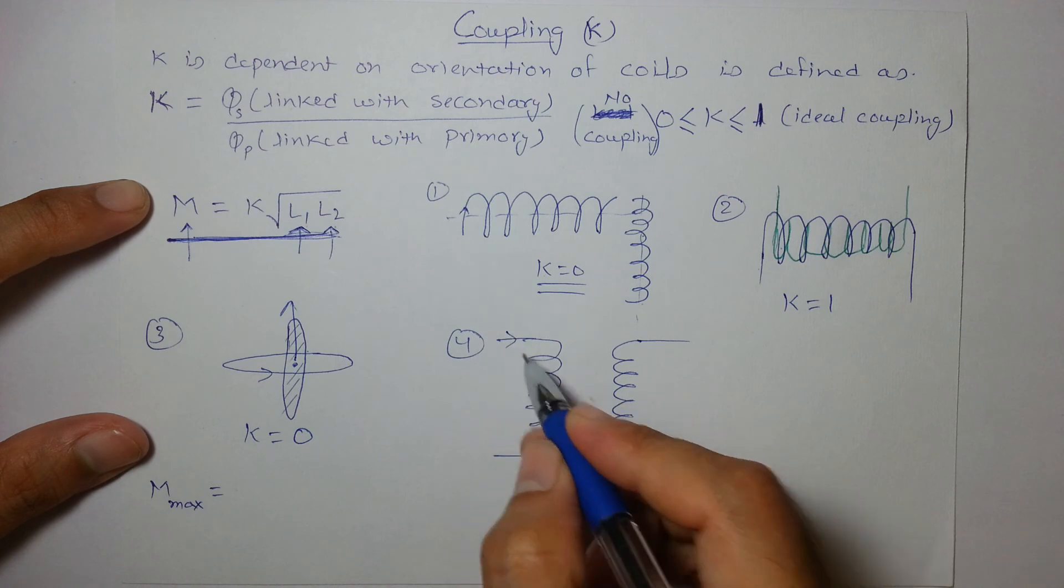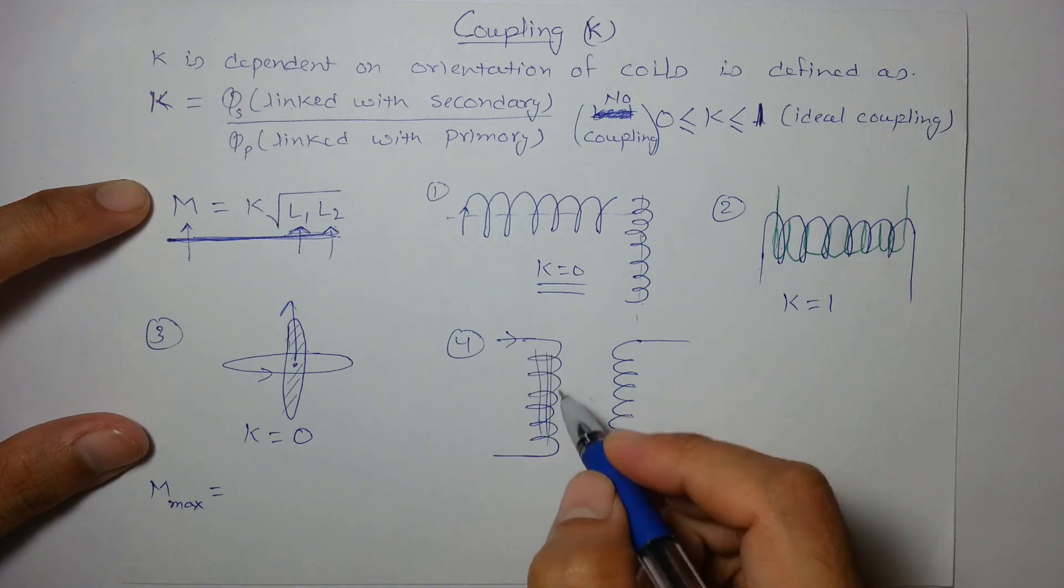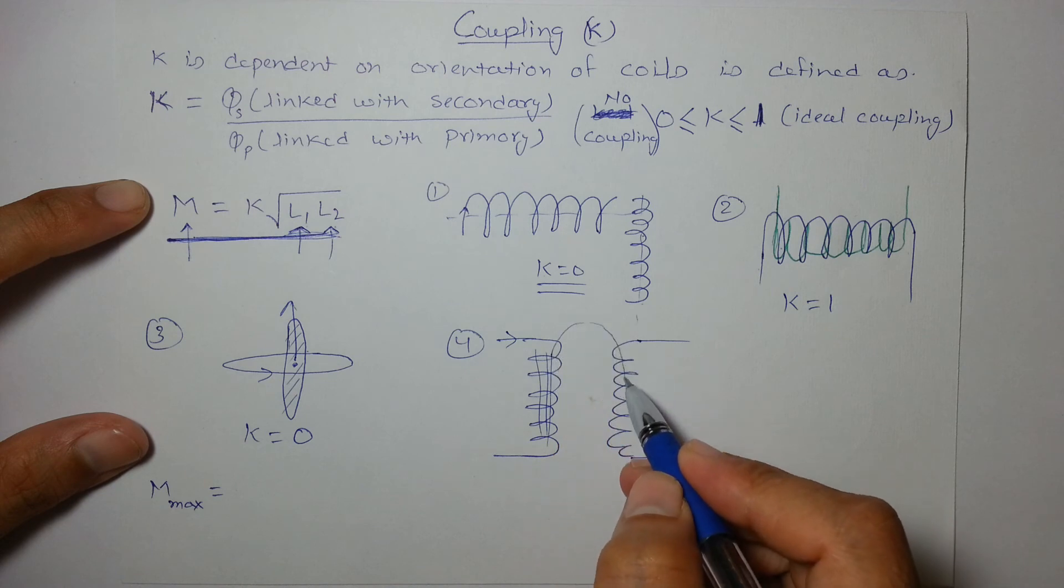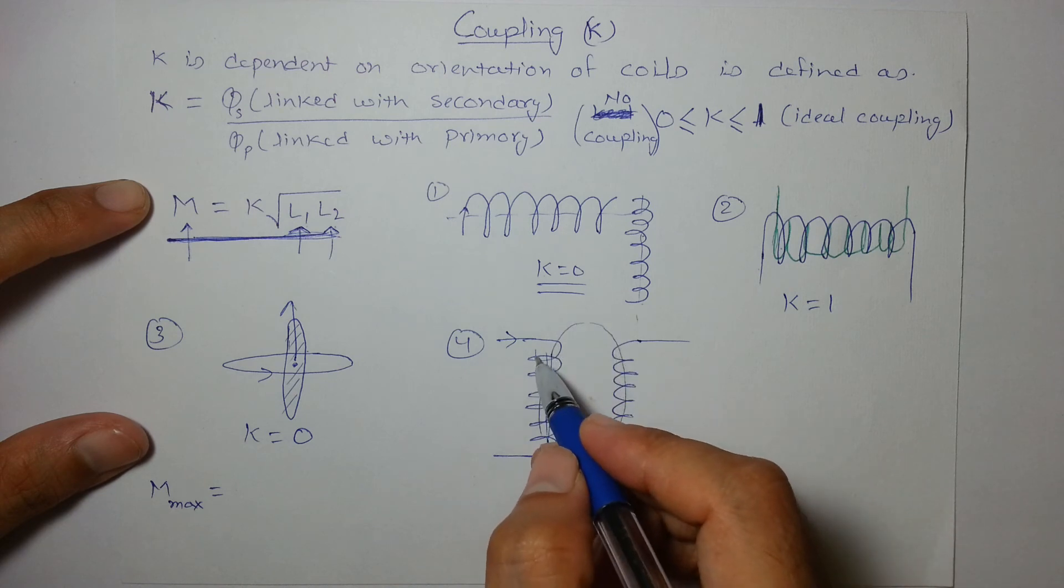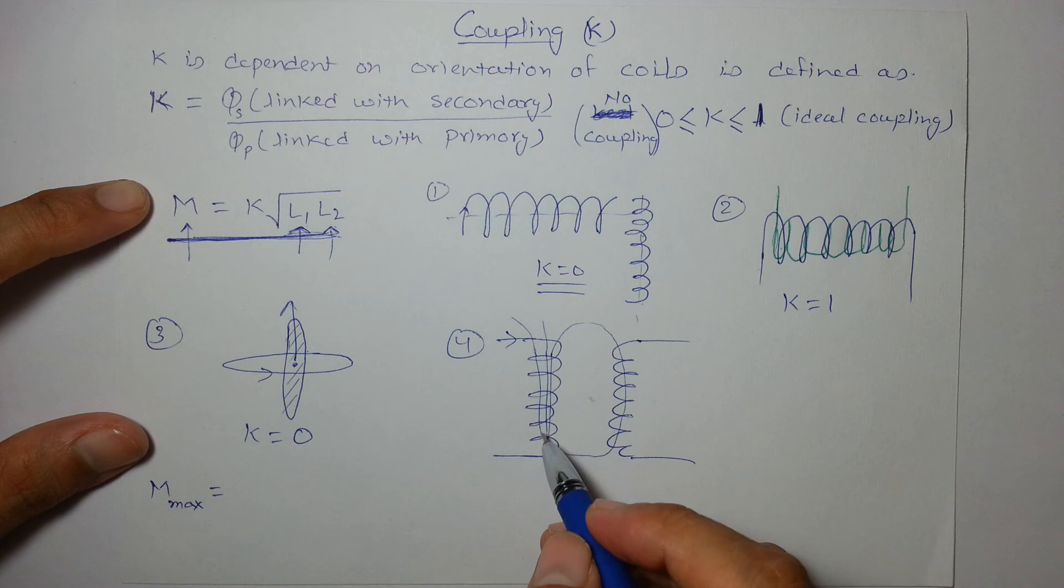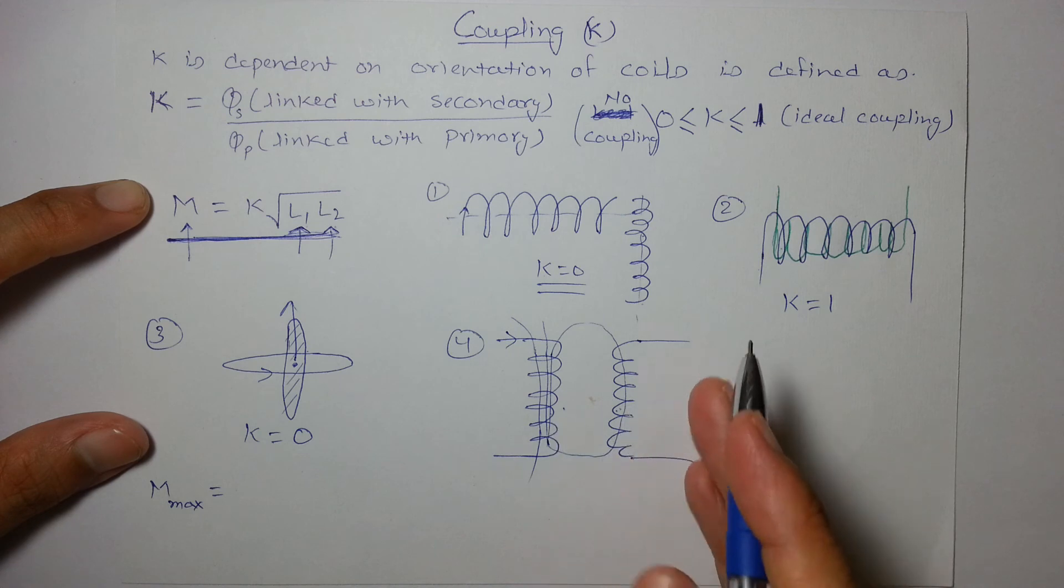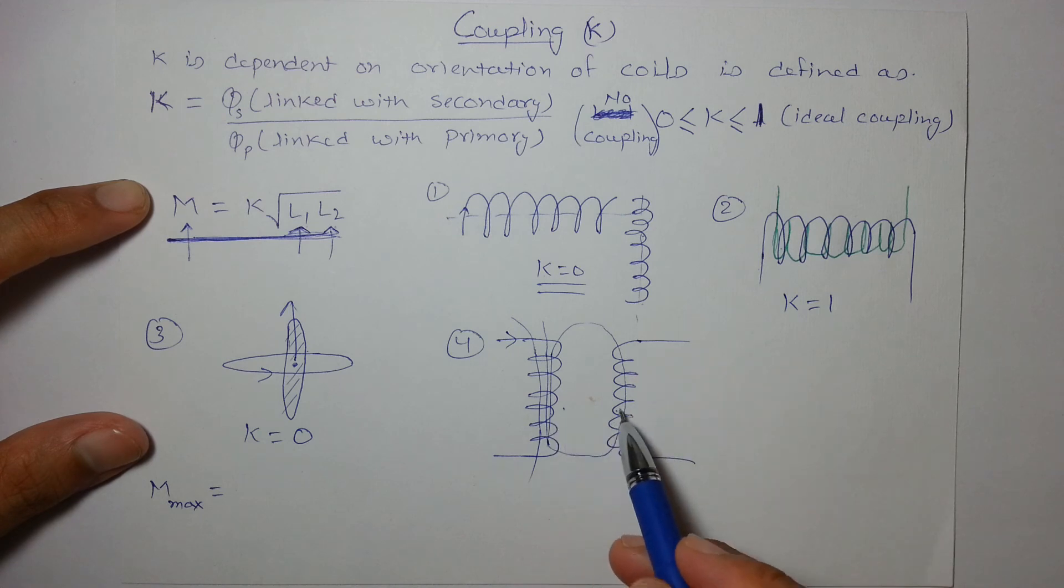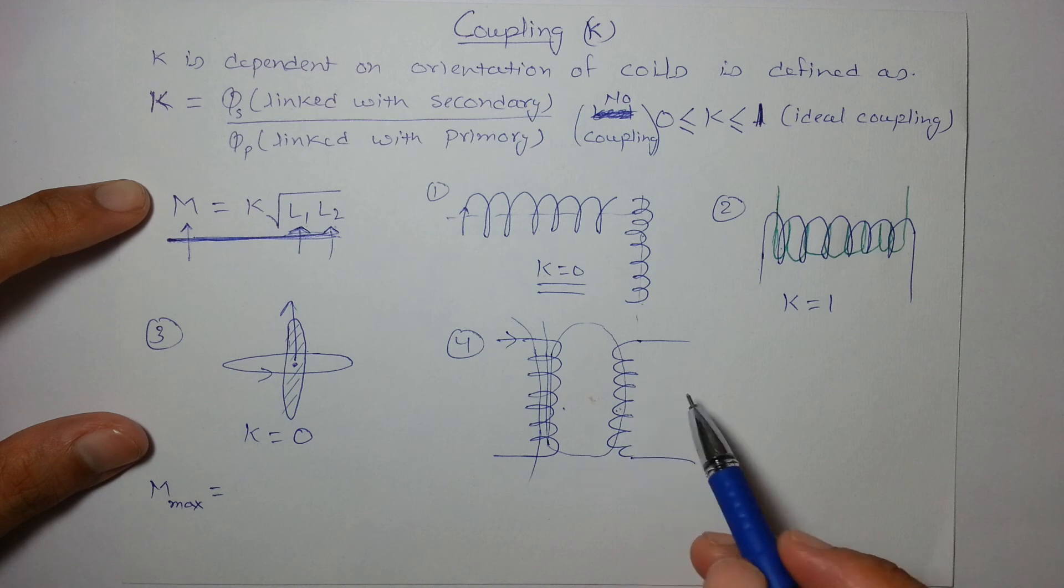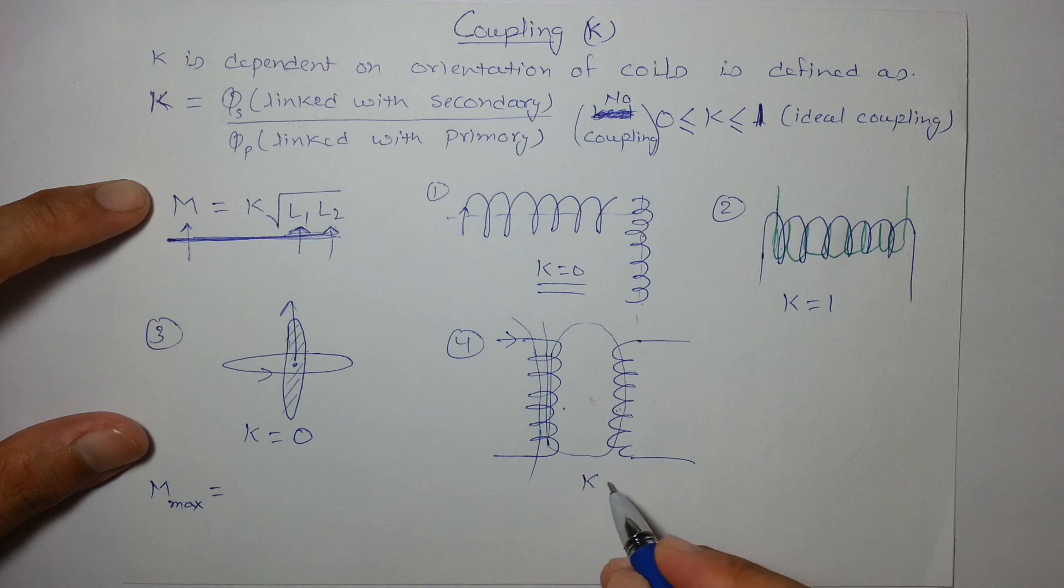If current passes through this and magnetic field lines are generated through this, only few will be able to pass through the other coil and rest will not. So the coupling coefficient is neither 0 nor 1 because we can decrease the distance and increase the coupling coefficient and vice versa. If we increase the separation, coupling coefficient will decrease, so K will be in this range—less than 1 and greater than 0.